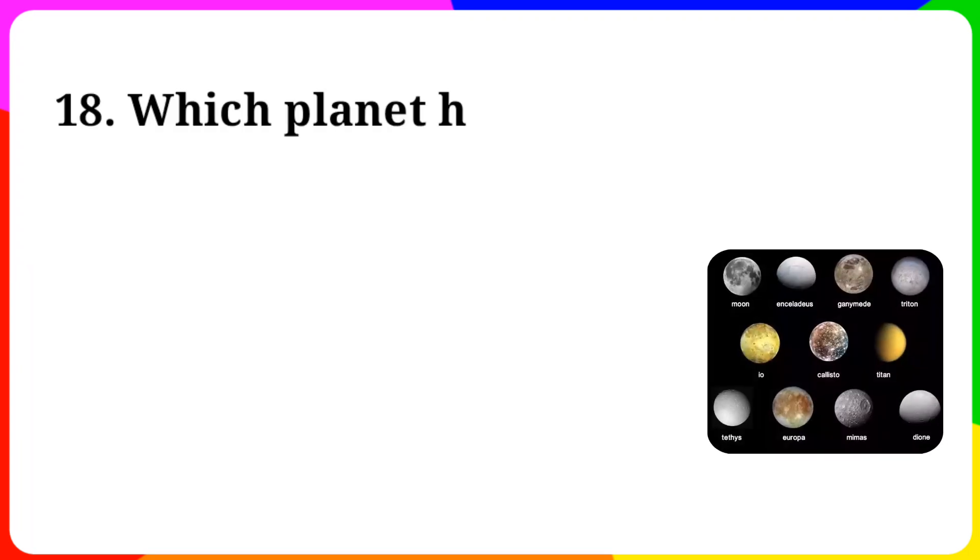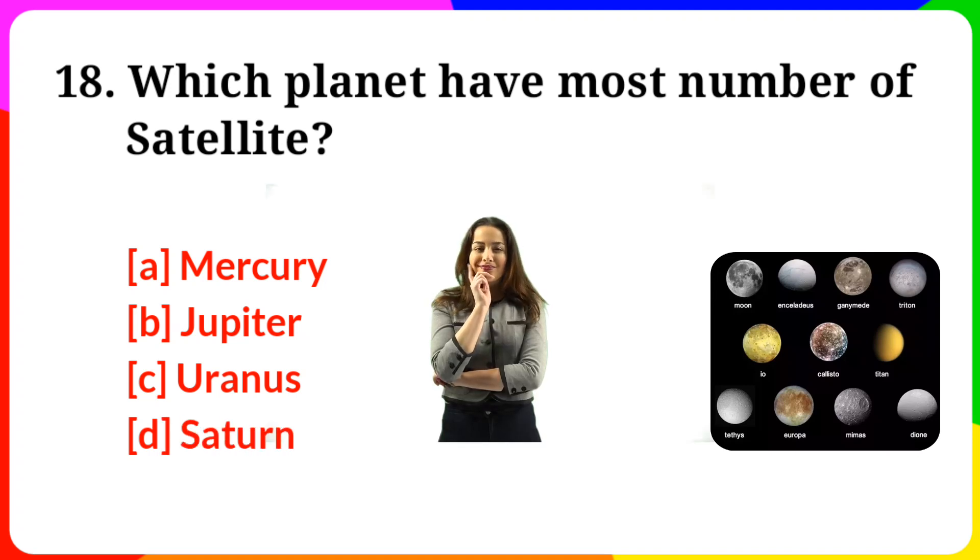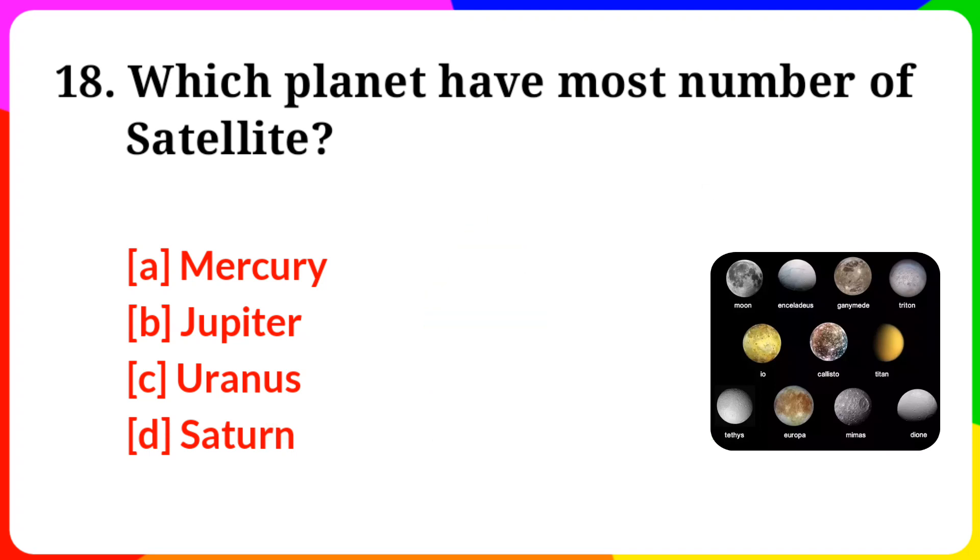Question number 18. Which planet have most number of satellite? Option A: Mercury. B: Jupiter. C: Uranus. D: Saturn. Answer is option B, Jupiter.